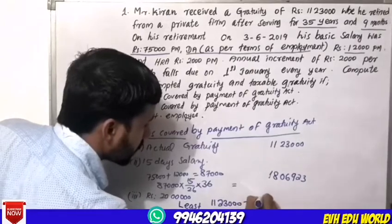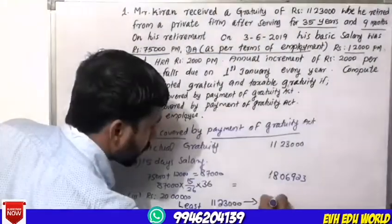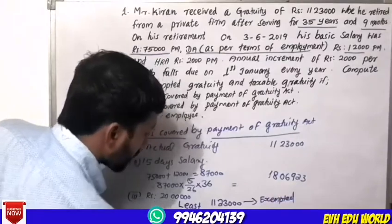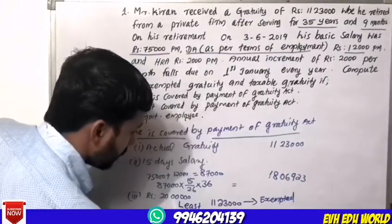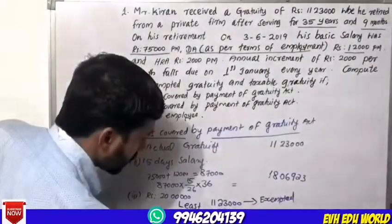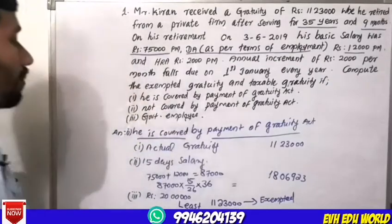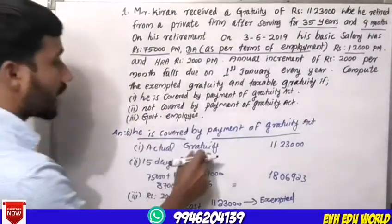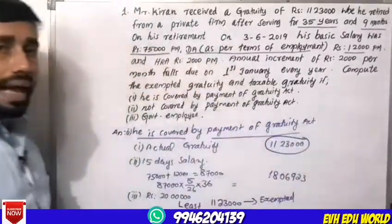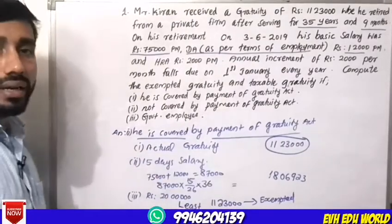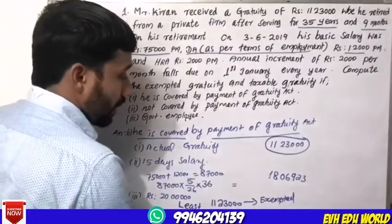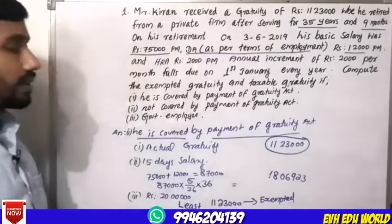The least amount among the three conditions is Rs. 20,00,000. Since the actual Gratuity received is Rs. 11,23,000, which is the least, the Exempted amount is Rs. 20,00,000. The taxable amount: because the actual amount received is less than or equal to the exempted limit, the taxable amount is zero.